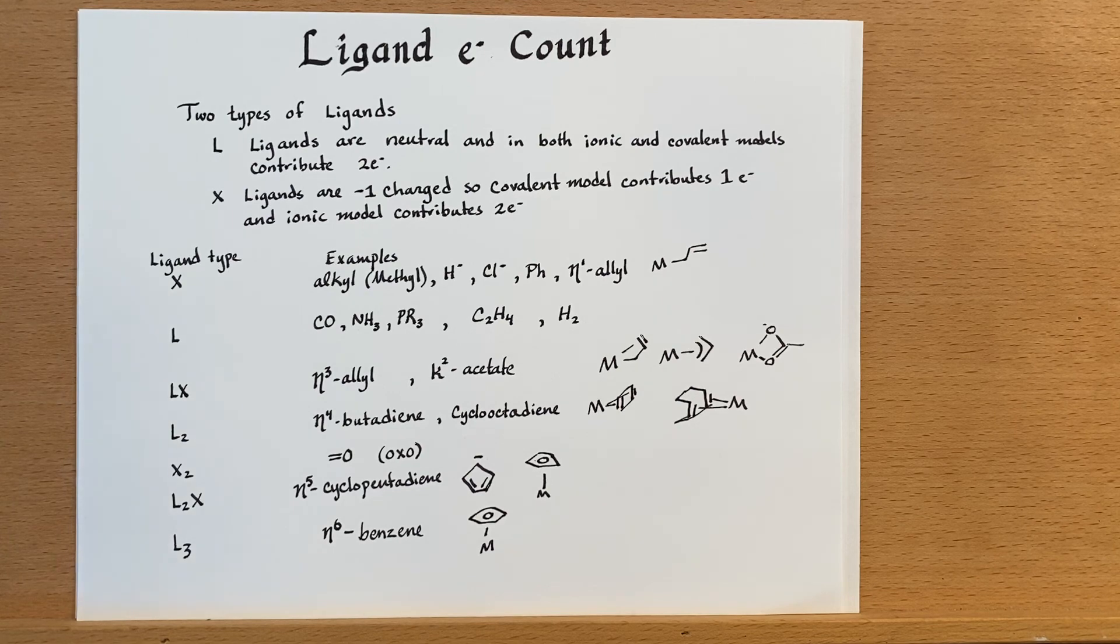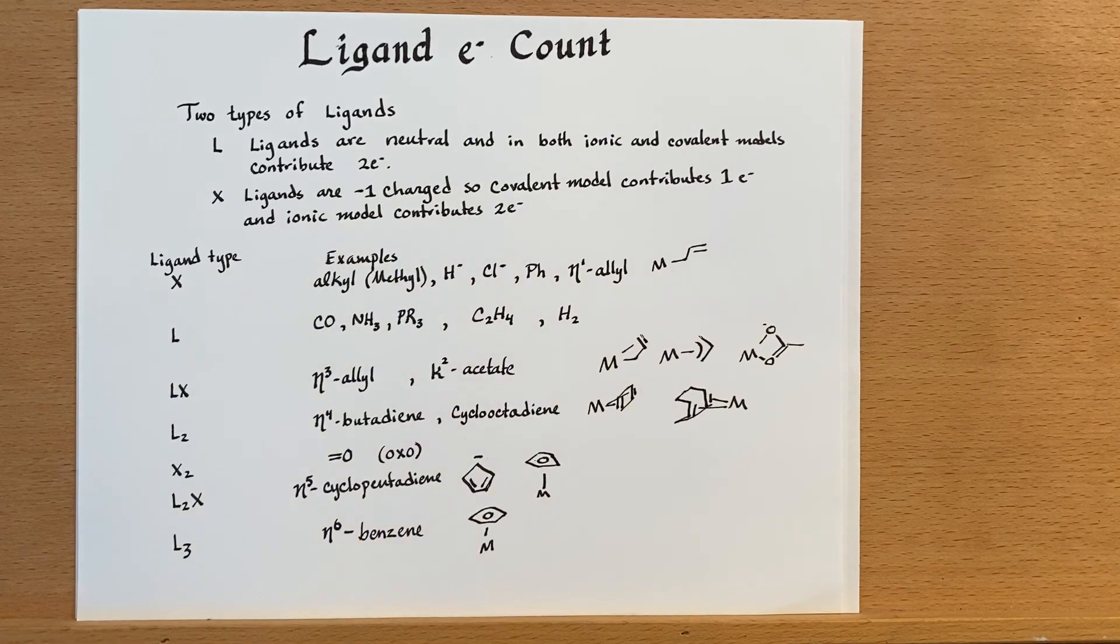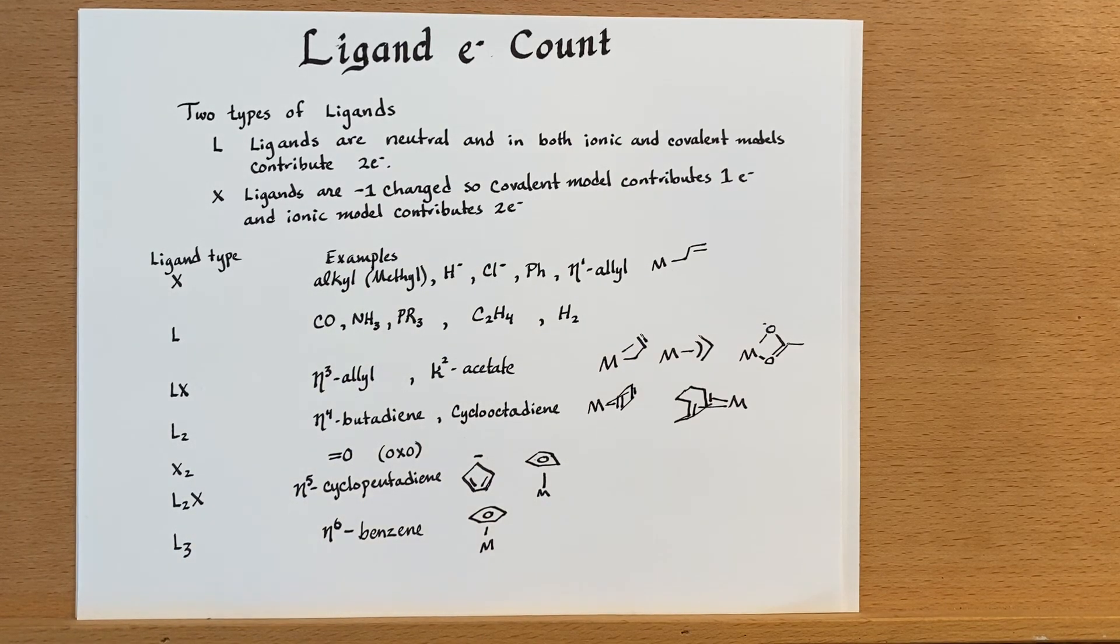So that's a little bit about how to count electrons in organometallic complexes using either the ionic model or the covalent model. And we'll need to keep this list kind of in mind, but simply put, keep track of how many negative charges are on your ligand. If there's a negative charge and then there's also a double bond, then you have your LX situation and you just kind of know how many electrons each one of those is. And that can make learning this list a bit easier.